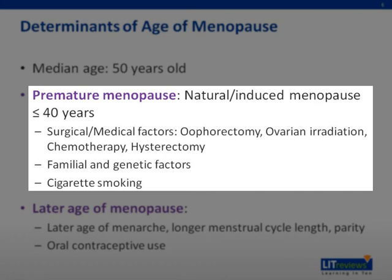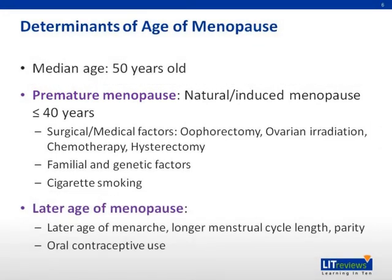Premature menopause is natural or induced menopause occurring at less than or equal to 40 years of age. This can be due to surgical or medical factors such as oophorectomy, ovarian irradiation, chemotherapy, or hysterectomy; familial and genetic factors such as ER-alpha polymorphism and twinning; and cigarette smoking. However, premature ovarian failure leading to permanent or transient amenorrhea under the age of 40 is not considered a form of premature menopause.